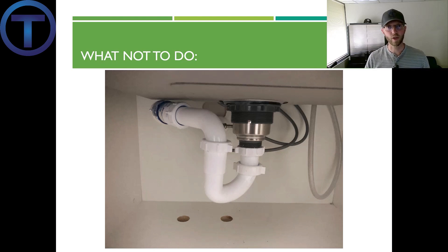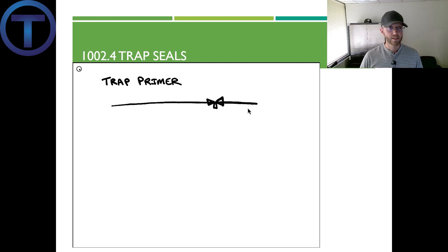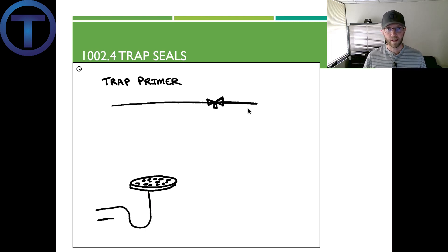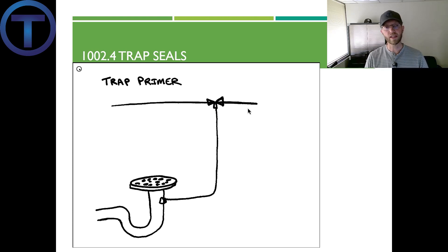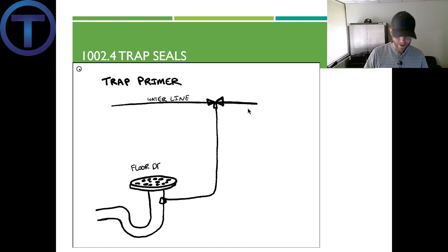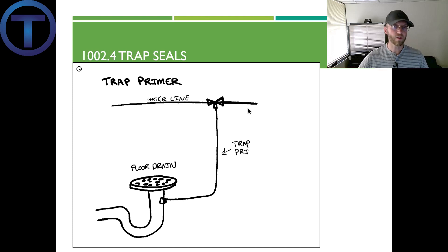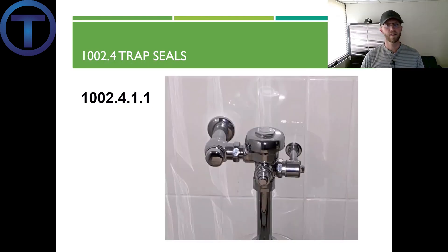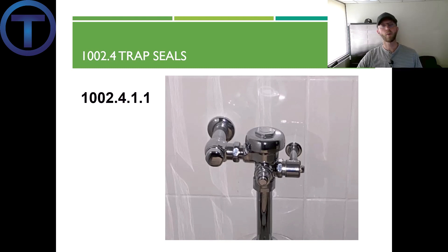There are going to be standing water in the bottom of the basket strainer. Section 1002.4 also talks about trap seal protection — maintaining liquid in the trap. If you have an emergency floor drain that's just there to catch water in case something floods, it's not going to stay wet, so we have to add water occasionally to make sure it doesn't dry out. Section 1002.4.1.1 talks about the potable water supplied trap seal primer — a valve that allows a little bit of water down into the trap, basically an intentional leak that just feeds the trap. Here's another example coming right off a flushometer valve: each time the flushometer valve flushes, it pushes a little water back into the wall down to a floor drain to keep it wet.